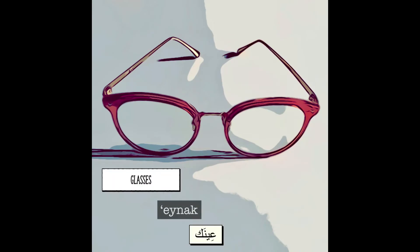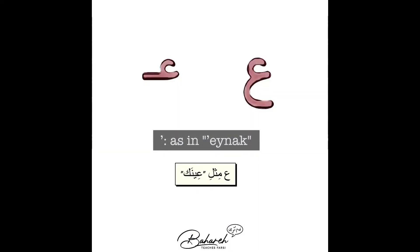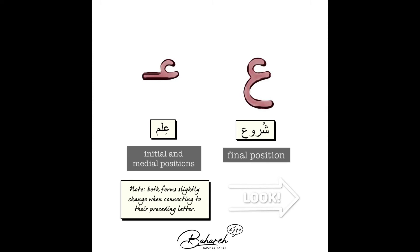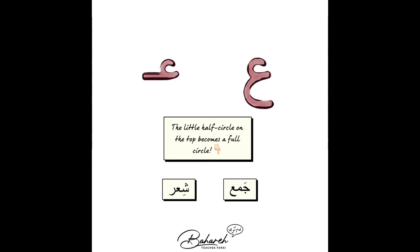Glasses, eynak. There are two forms of the letter eyn, which doesn't have an alphabetic equivalent in English, but it sounds like the little pause we make when pronouncing English vowels at the beginning of a word. A good example would be the initial and the medial sounds we make in the English exclamation, uh-oh.